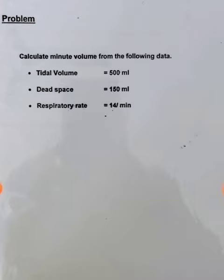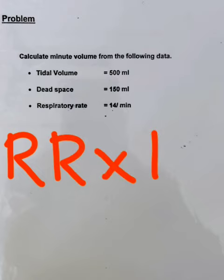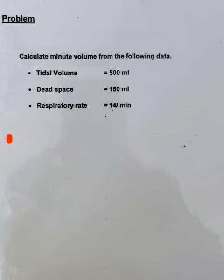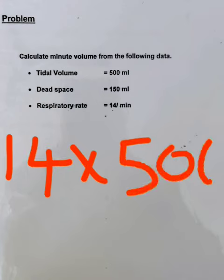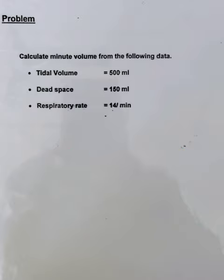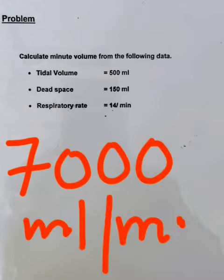Minute volume is the product of respiratory rate and tidal volume: respiratory rate multiplied by tidal volume, that is 14 into 500, which comes to 7000 milliliters per minute — or seven liters per minute.